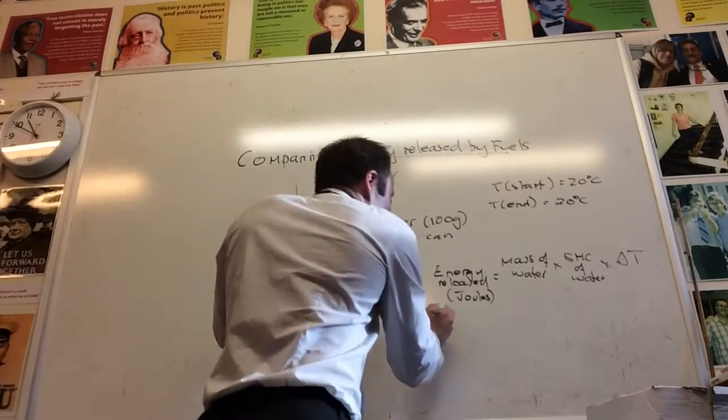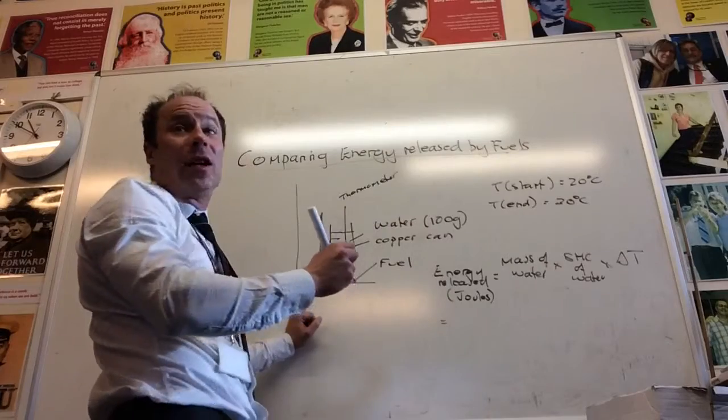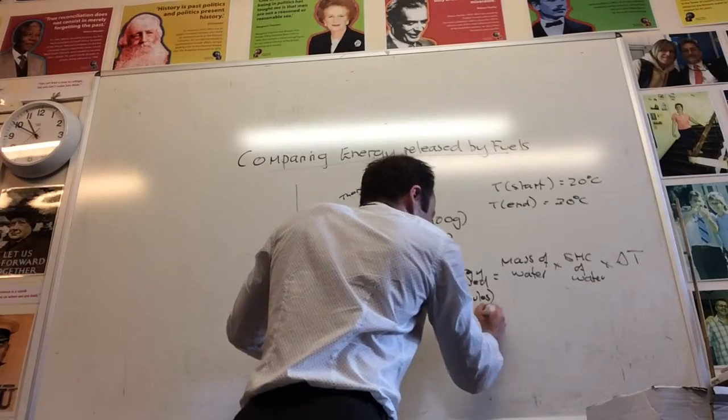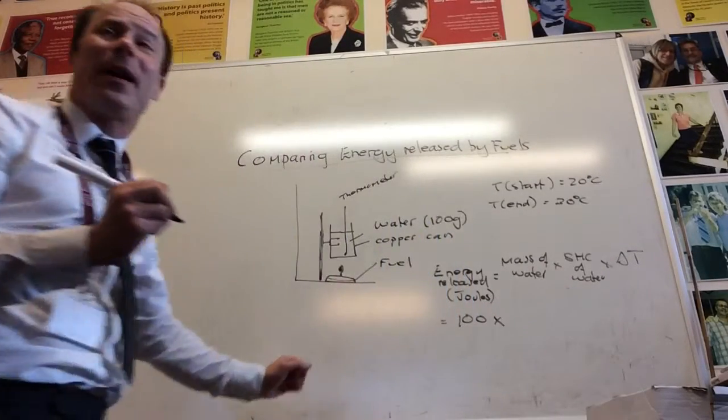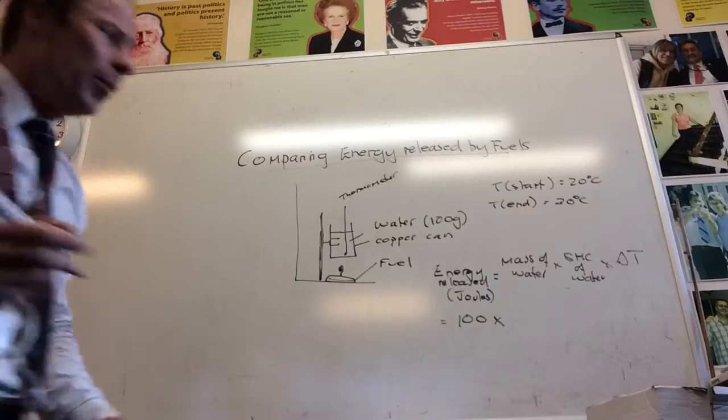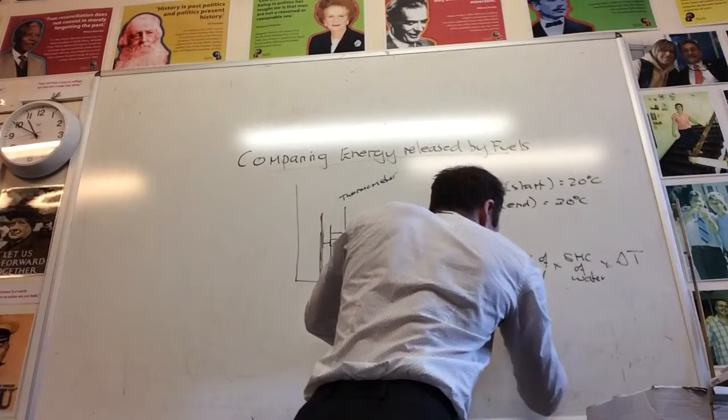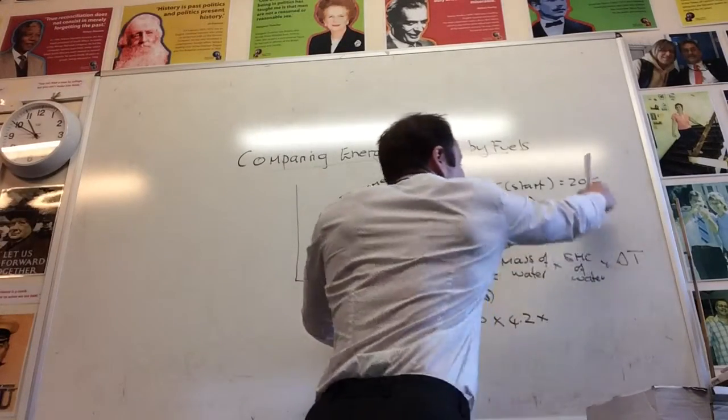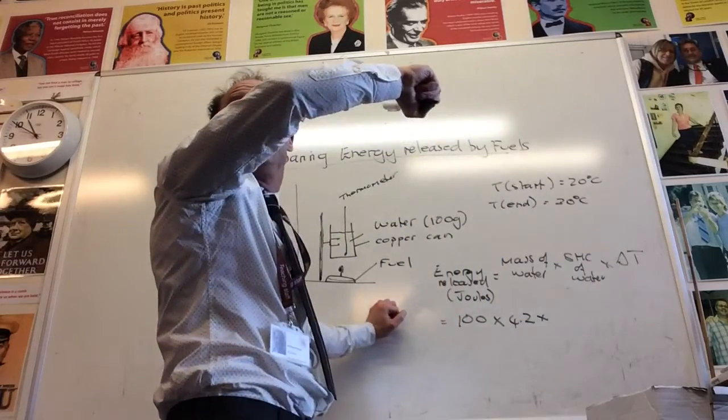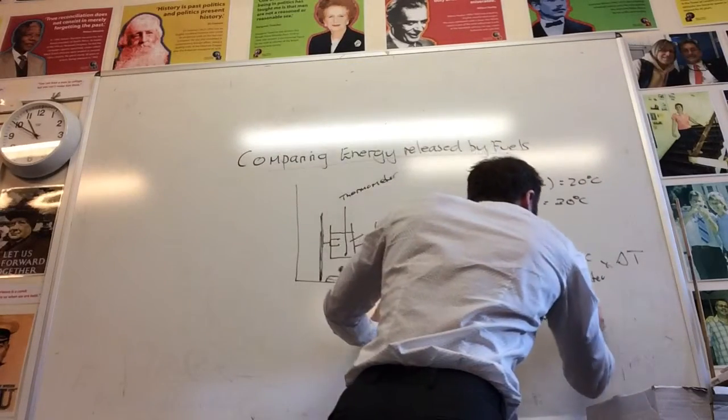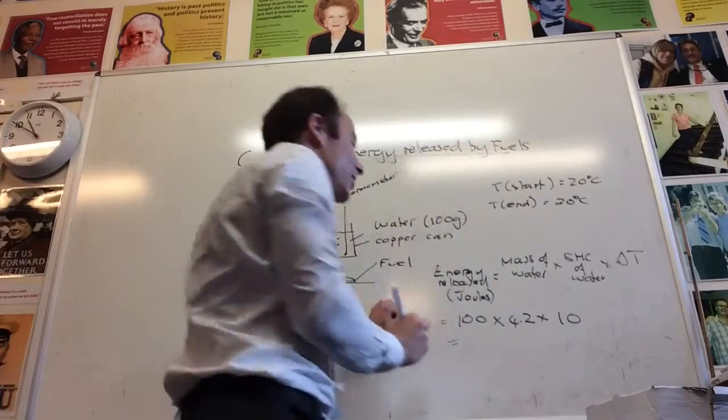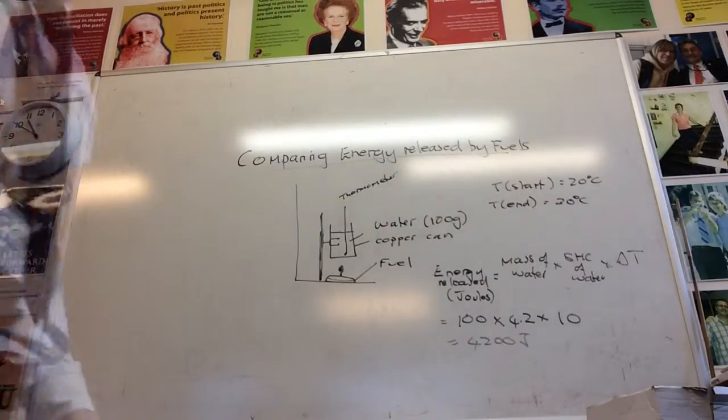In this example, the energy released would be the mass of water, which is 100 grams, the specific heat capacity 4.2, times your temperature change, which for us is 10 degrees. So if you times all those values together, you would get the energy released.